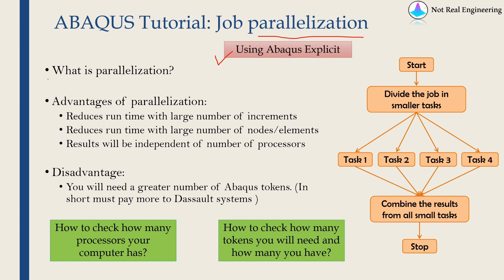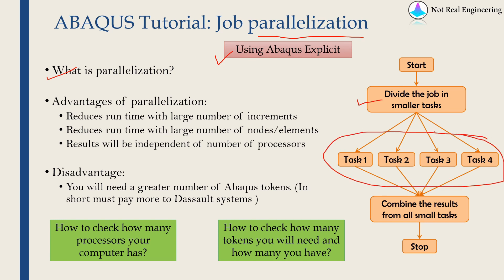Before we begin, let me briefly explain what parallelization is. Usually whenever you run any process on a computer, it will run on a single processor by default. But parallelization is nothing but dividing a big job into multiple smaller tasks and giving those tasks to more processors. Those processors will work simultaneously, saving you time, and at the end the results from all those tasks will be combined into your final output.